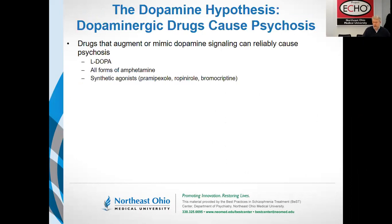Pillar number two is the converse: drugs that block dopamine can alleviate psychosis, and drugs that augment dopamine signaling can fairly reliably cause psychosis. Pro-dopamine drugs listed here all have the ability to elicit psychosis as a side effect. L-DOPA, a precursor for dopamine used in the treatment of Parkinson's disease, produces psychosis at high enough doses.